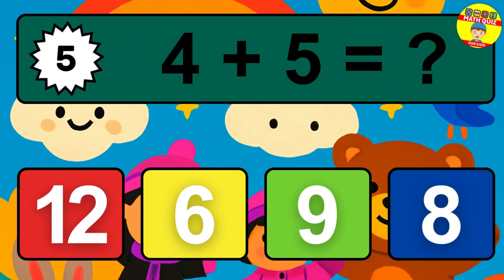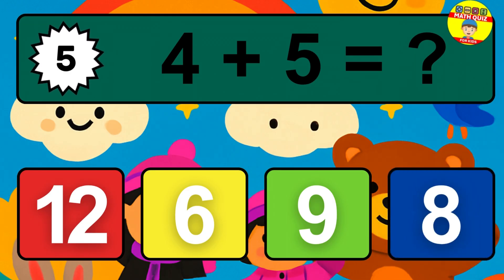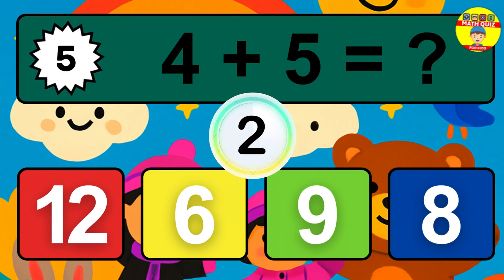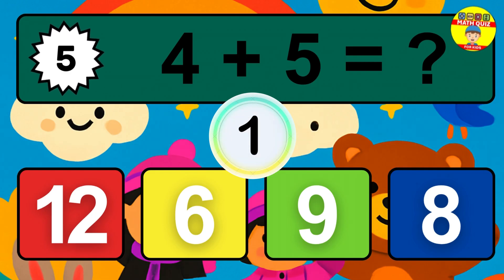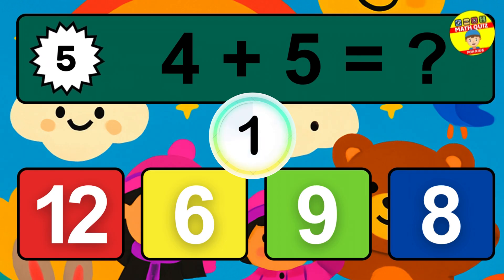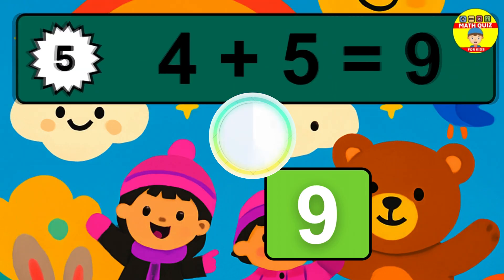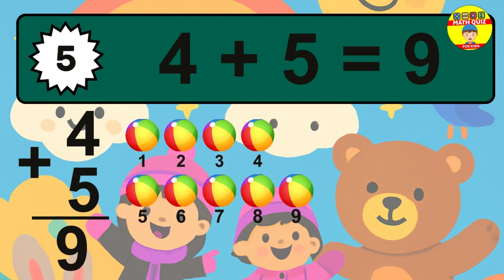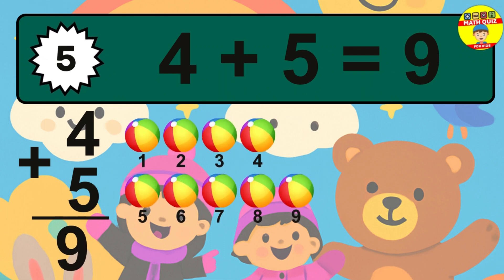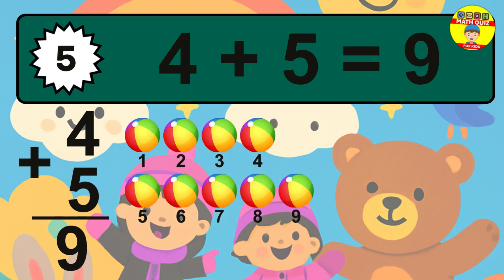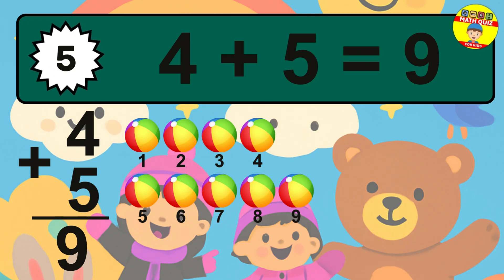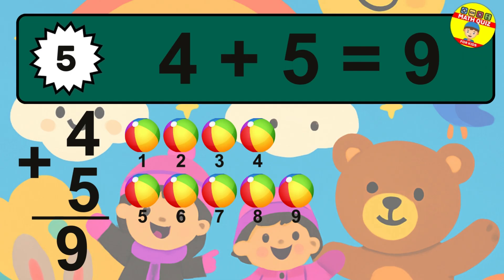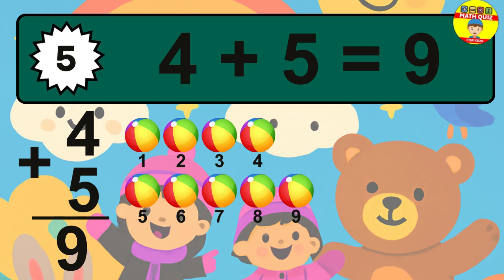Question 5. 4 plus 5 equals what? The answer is 4 plus 5 is 9. Let's count it: 1, 2, 3, 4, 5, 6, 7, 8, 9.